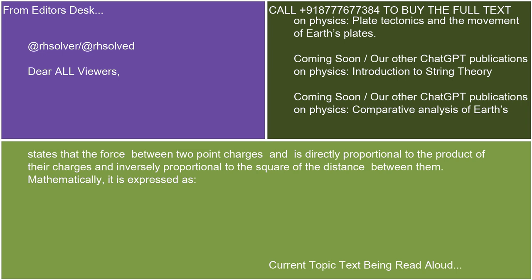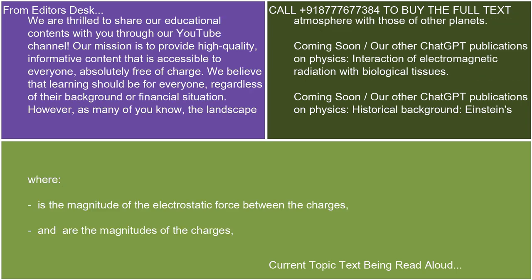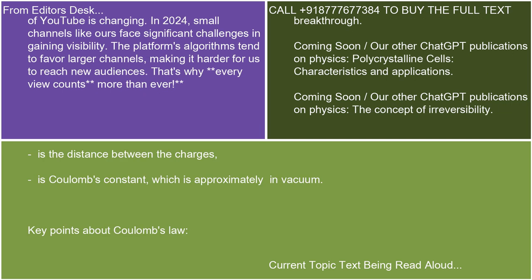Mathematically, it is expressed as: F is the magnitude of the electrostatic force between the charges; q1 and q2 are the magnitudes of the charges; r is the distance between the charges; and k is Coulomb's constant, which is approximately 8.99×10⁹ N·m²/C² in vacuum.